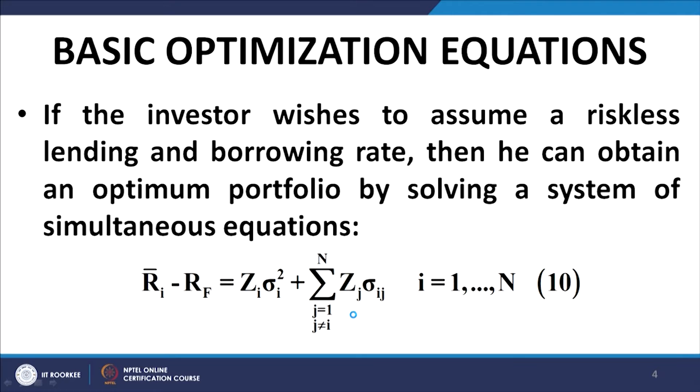We have the optimization equation — the fundamental optimizing equation in the mean-variance framework. If the investor wishes to assume a risk-free lending and borrowing rate, we are also allowing risk-free lending and borrowing within this model, together with short selling of the risky securities. Then you can obtain an optimum portfolio by solving a system of simultaneous equations given by equation number 10.